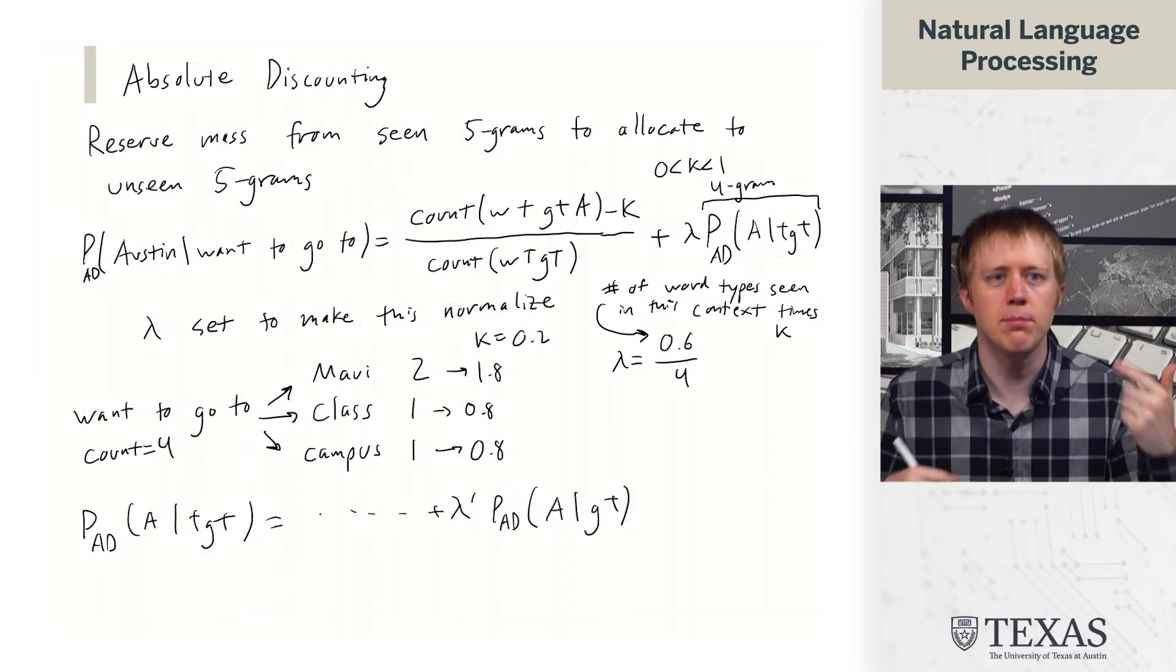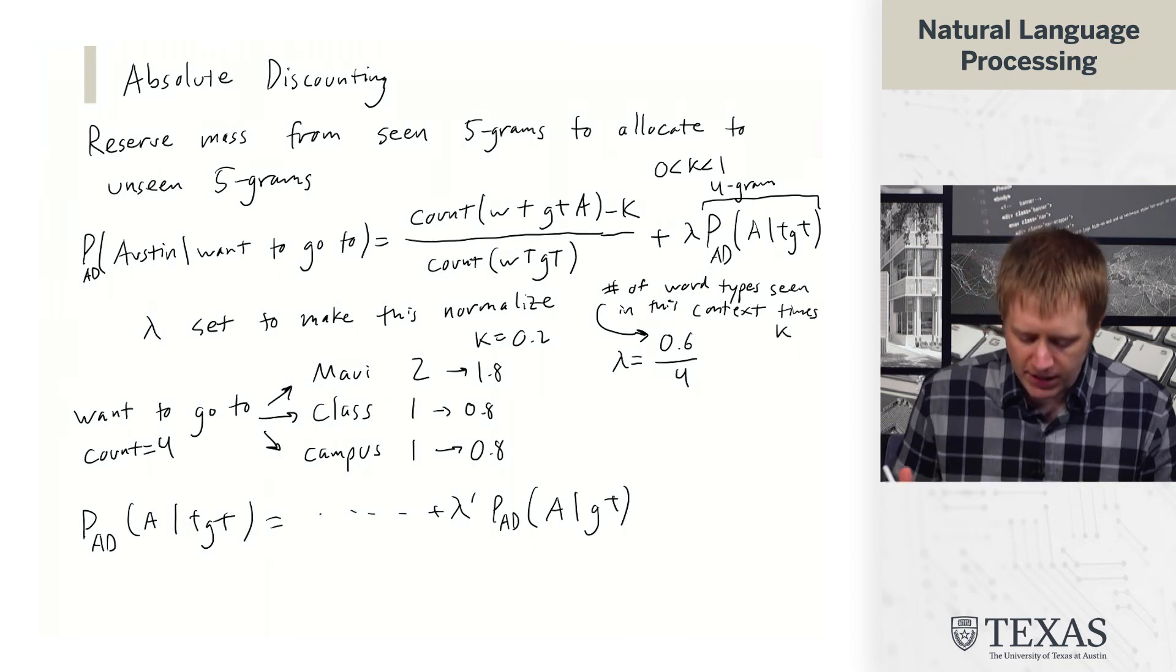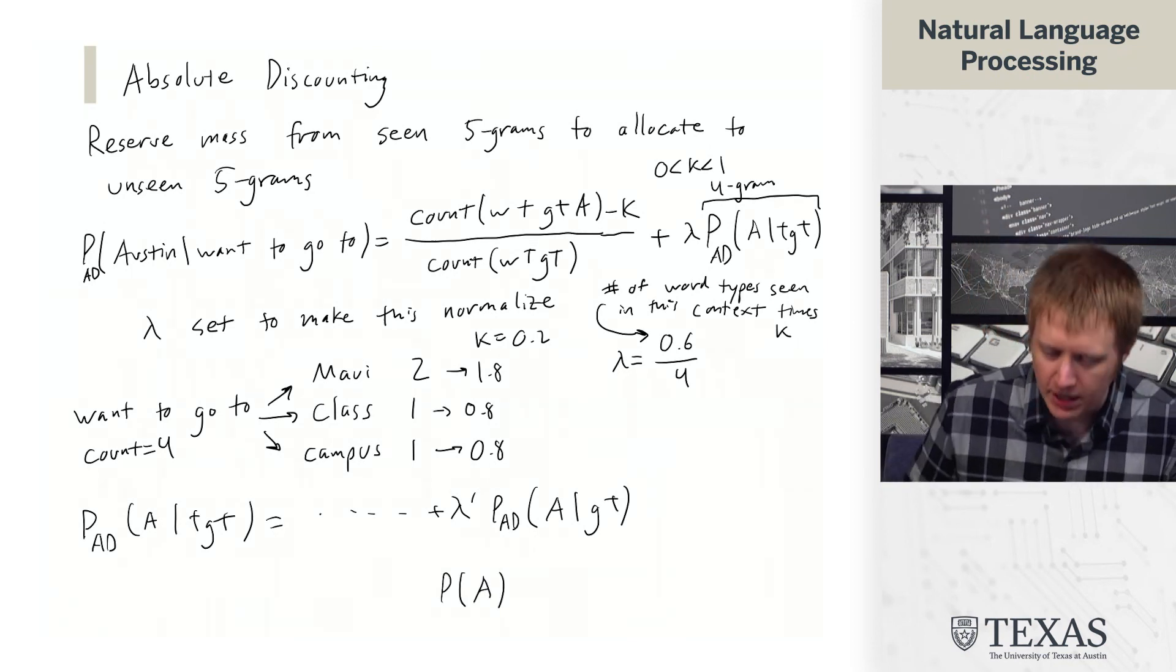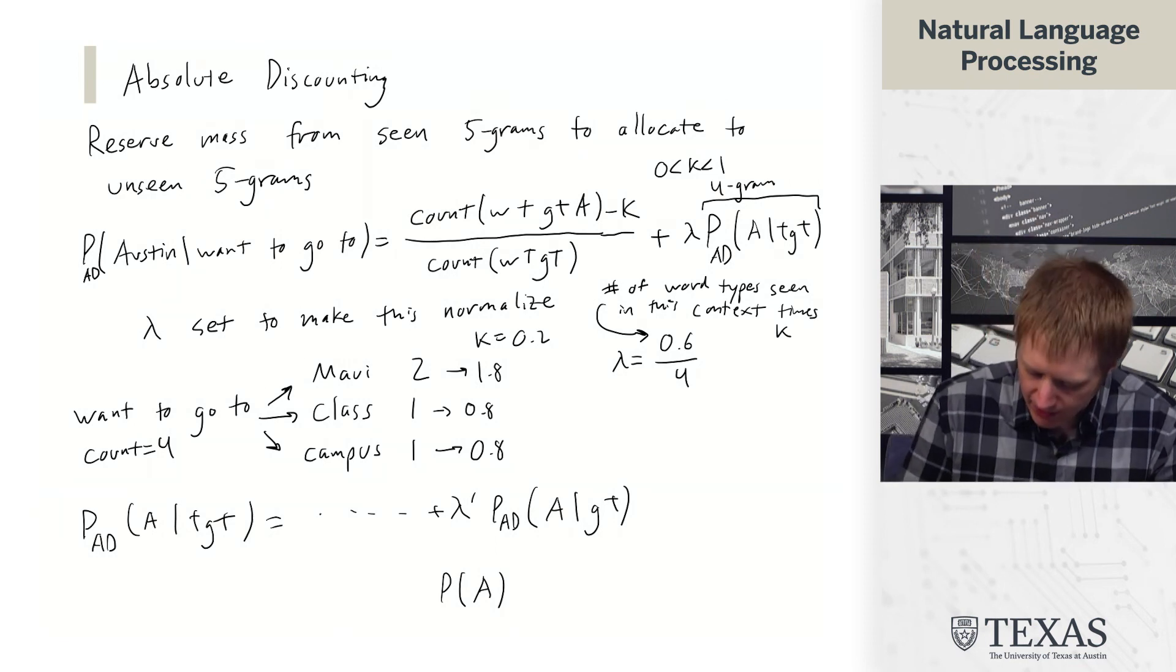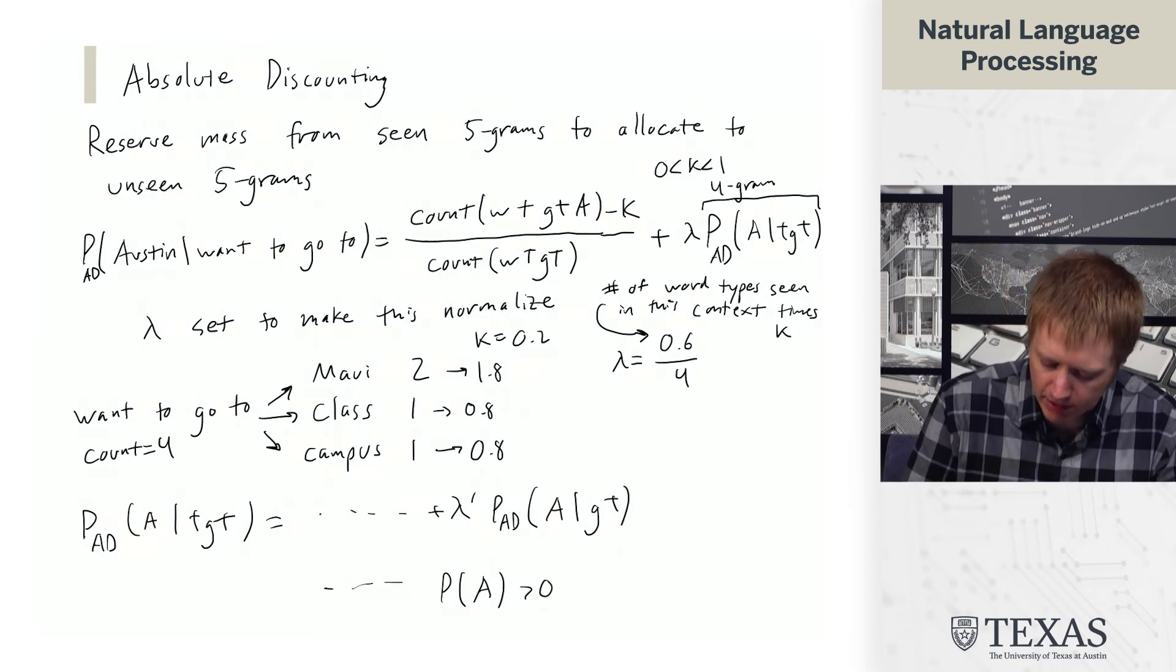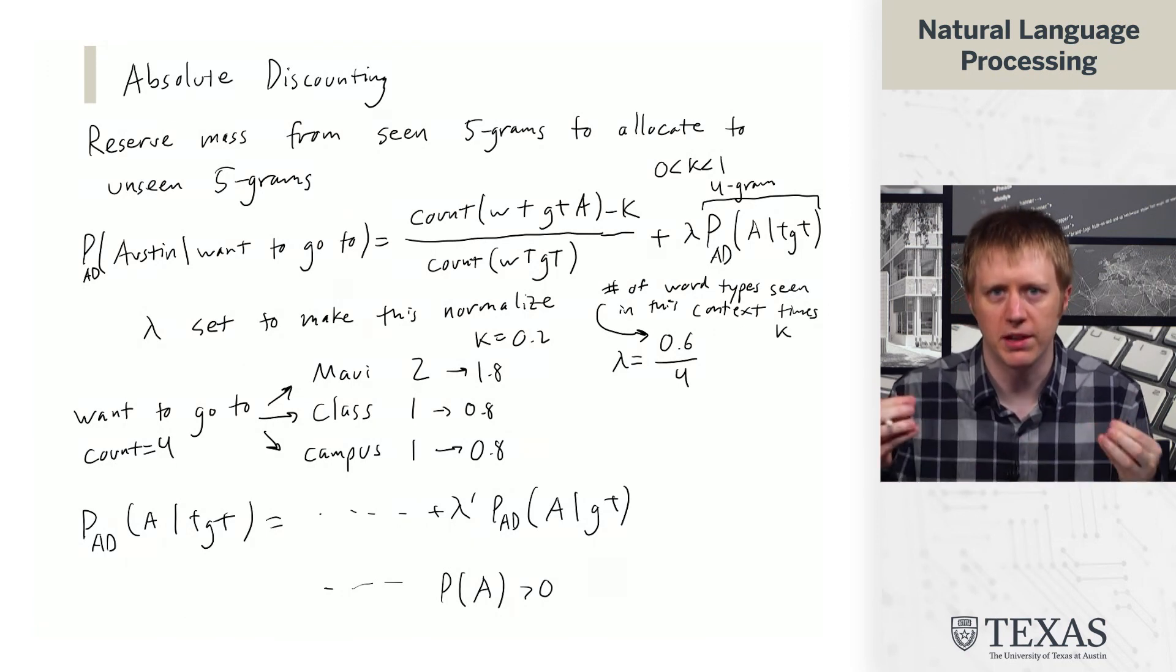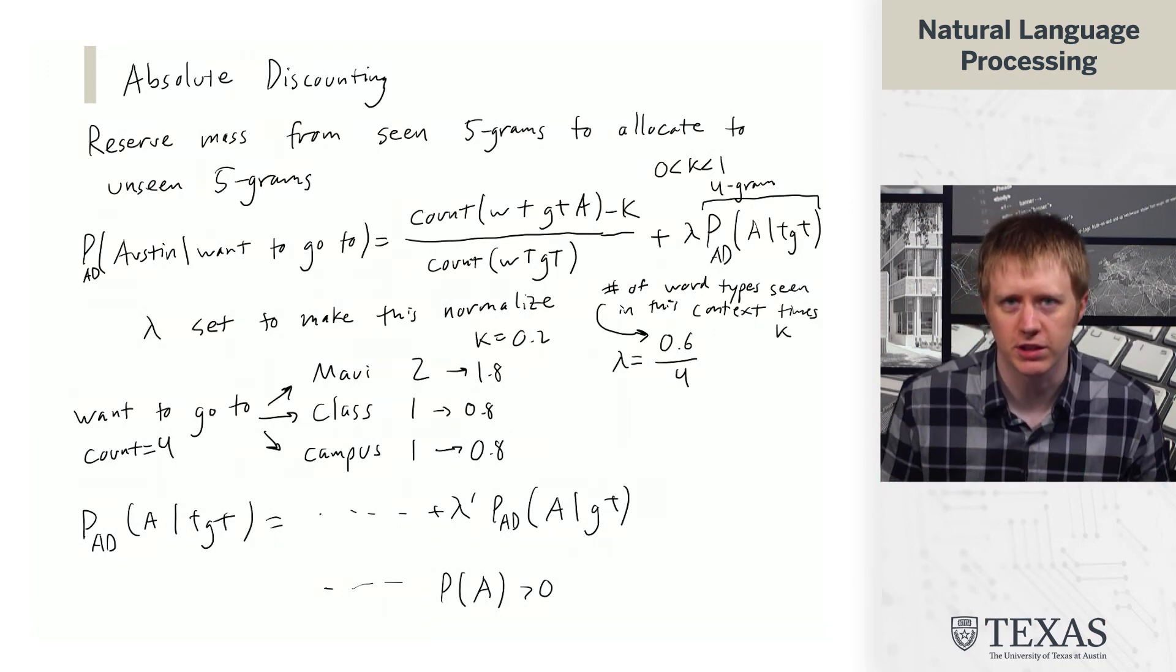And if you keep unrolling this, eventually you just get the probability of Austin at the very end. And then this is always going to be greater than 0. If Austin is a word that's shown up in our data, but likely we're only placing a distribution over words that we actually have seen.